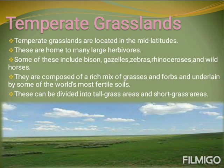Temperate grasslands are located in the mid-latitudes. These are home to many large herbivores. Some of these include bisons, grizzlies, zebras, rhinoceroses, and wild horses. These can be divided into tall grasses areas and short grasses areas.